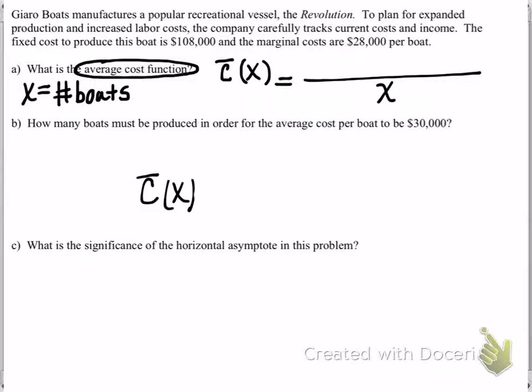Now we just need to write our cost function. You'll notice there's two amounts given to us in this problem. It says we have fixed costs of $108,000. So we're going to pay those amounts or this amount one time. And then the marginal costs, which are the costs that you're paying per boat, of $28,000.